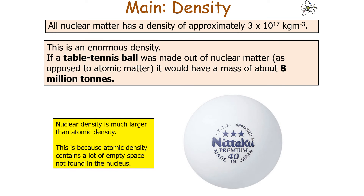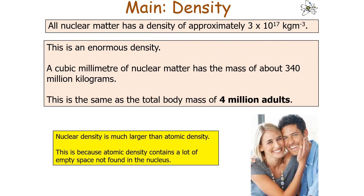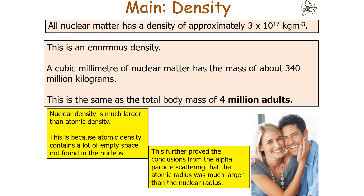If a table tennis ball were made of nuclear matter rather than atomic matter, it would have a mass of about 8 million tonnes. Please remember that nuclear density is much larger than atomic density, because atomic density contains lots of empty space not found in the nucleus. A cubic millimetre of nuclear matter has a mass of about 340 million kilograms, equivalent to the total body mass of about 4 million adults. This provides further proof from the alpha particle scattering experiment that the atomic radius is much larger than the nuclear radius.